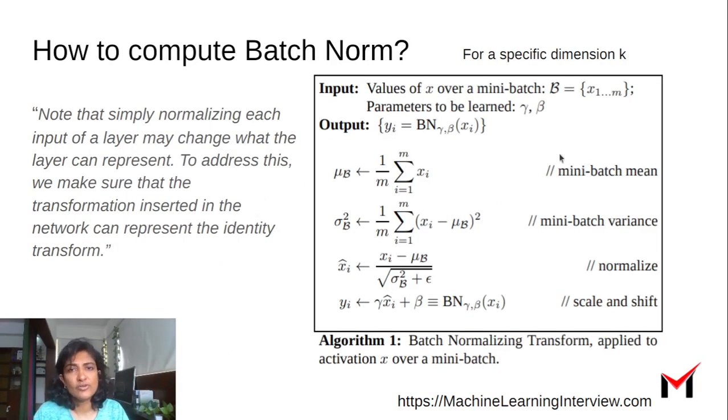Here is the pseudo code from the paper for batch normalization. First you are computing the mean, then you are computing the standard deviation, and then you compute x_i hat by subtracting mean and dividing by square root of variance plus epsilon, which is a smoothing constant.